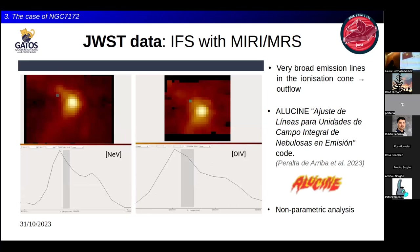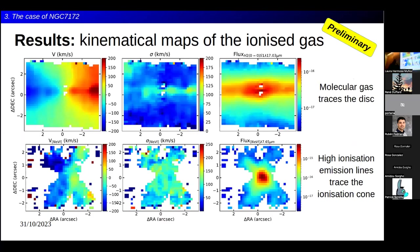To give you an overview of the complexity of the data, here are screenshots from CubeViz of two different cubes. We see the Neon 5 and Oxygen 4 lines immediately showing very complex profiles that need to be modeled carefully. For that, we have started using Alucine, a code published by Luis Peralta in 2023 that models spectra with Gaussians and can handle MUSE, MEGARA, and JWST data. We've complemented it with a self-developed code and a non-parametric analysis of the emission lines, since the two components are quite separated.